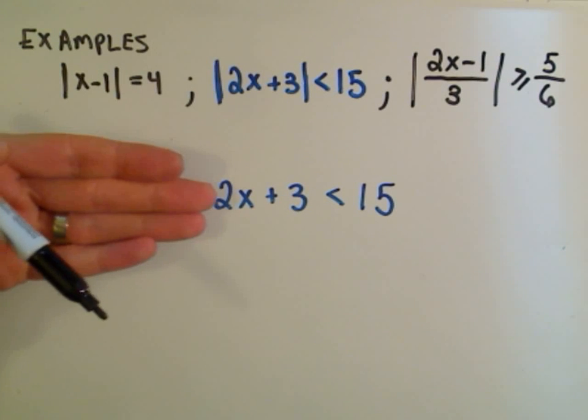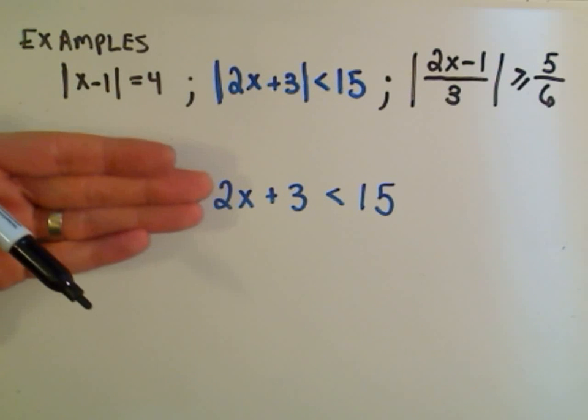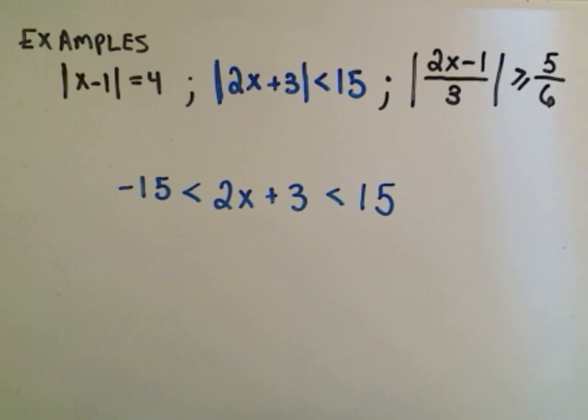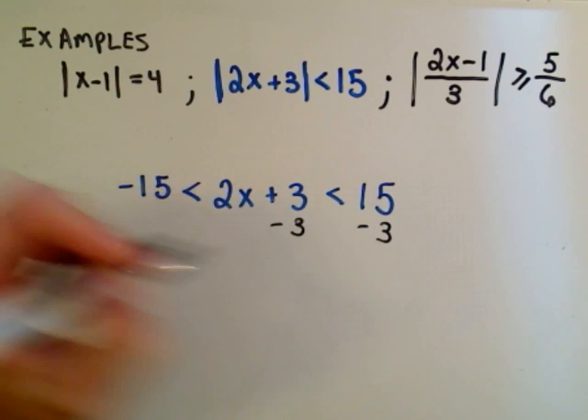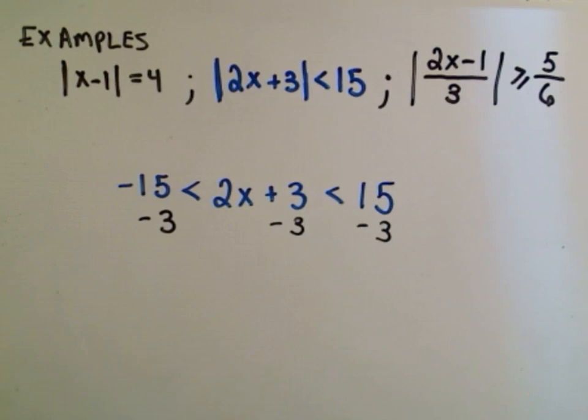If you were going to solve 2x plus 3 less than 15, the first thing I would do would be subtract 3. That's what we're going to do. We also have to do it to the left side here as well.